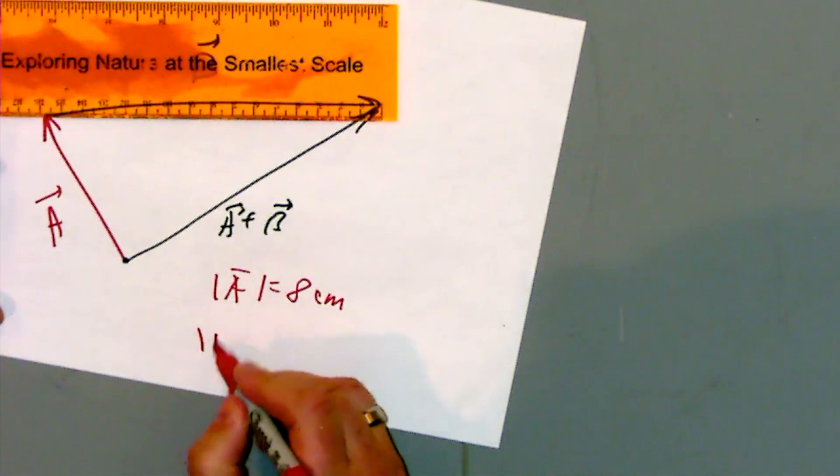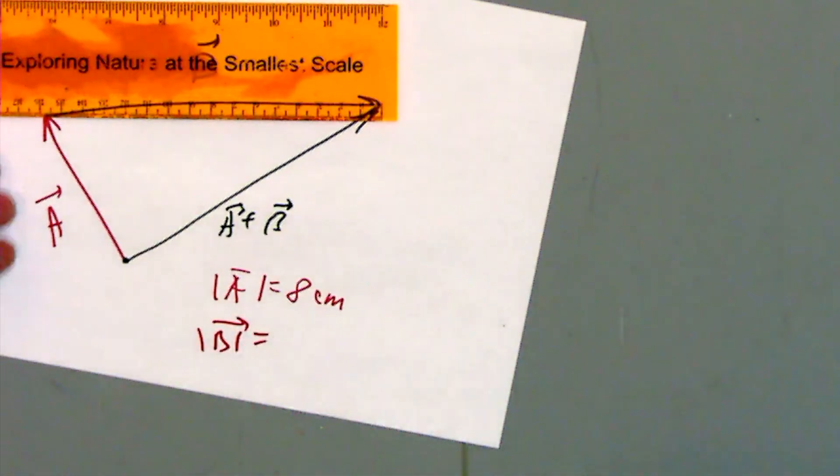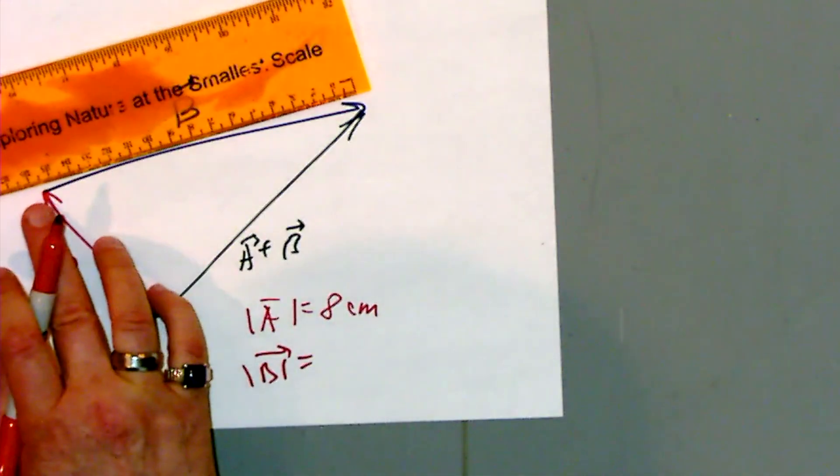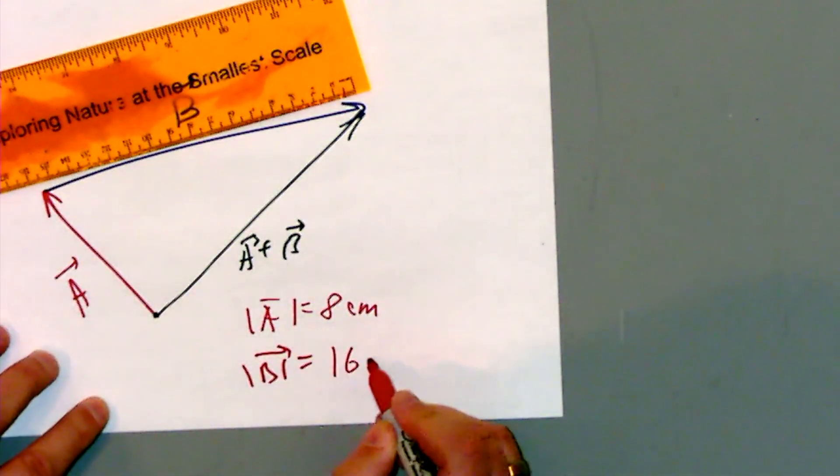The magnitude of B is equal to 16 centimeters.